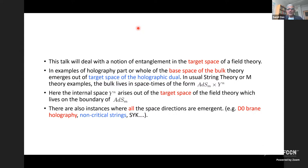This talk deals with a different notion: entanglement in the target space of a field theory. In examples of holography, part or whole of the base space of the bulk theory emerges out of the target space of the holographic dual. For example, in usual string theory or M-theory examples, the bulk lives in spacetimes of the form AdS cross Y, where Y is some internal space. The internal space arises out of the target space of the field theory on the boundary. In AdS₅ × S⁵, the N=4 Yang-Mills theory has six scalars which form the embedding coordinates of the S⁵. There are also instances where all space directions are emerging — for example in D0-brane holography, non-critical strings, SYK models, and many others.